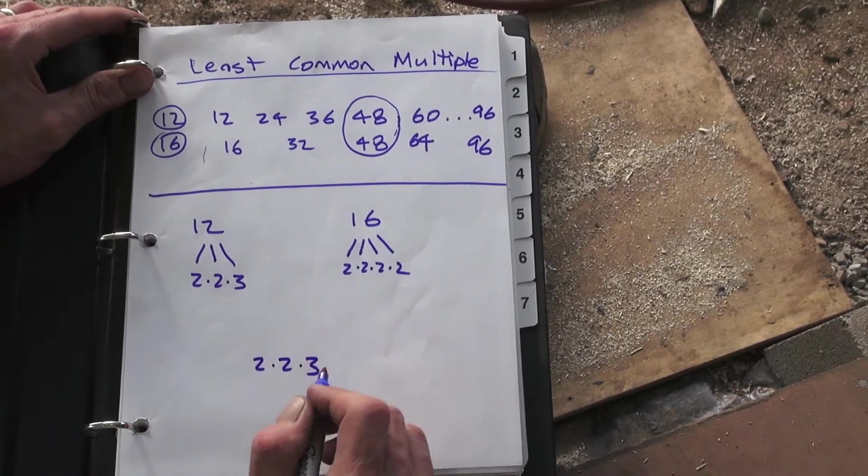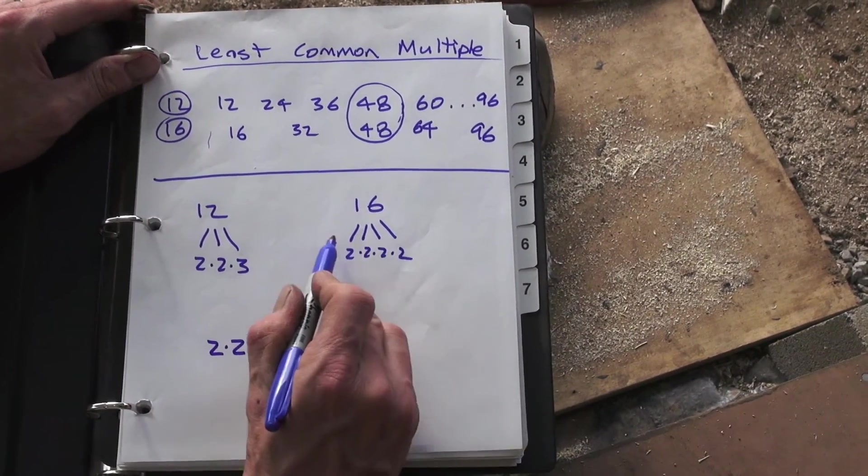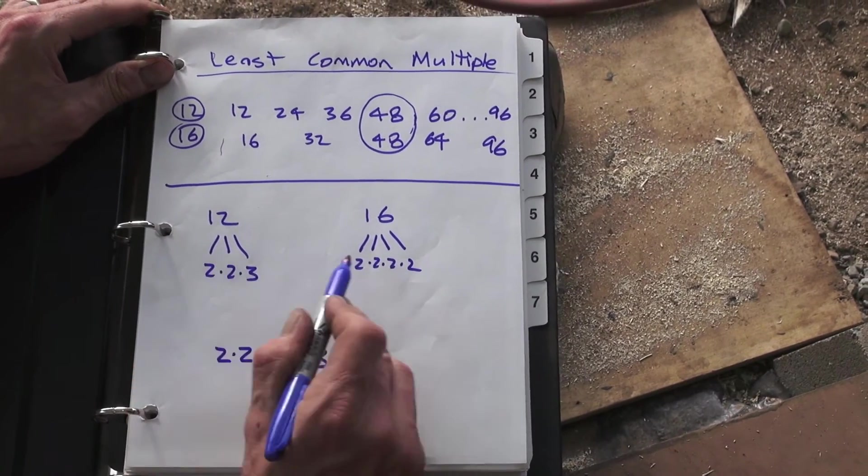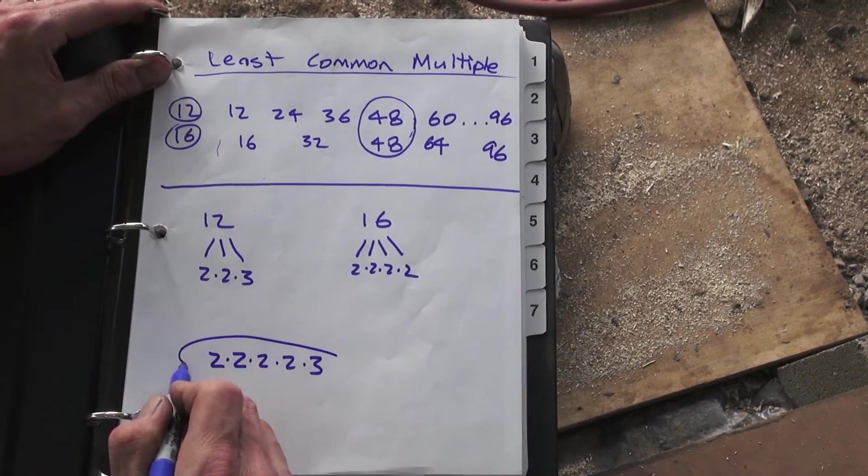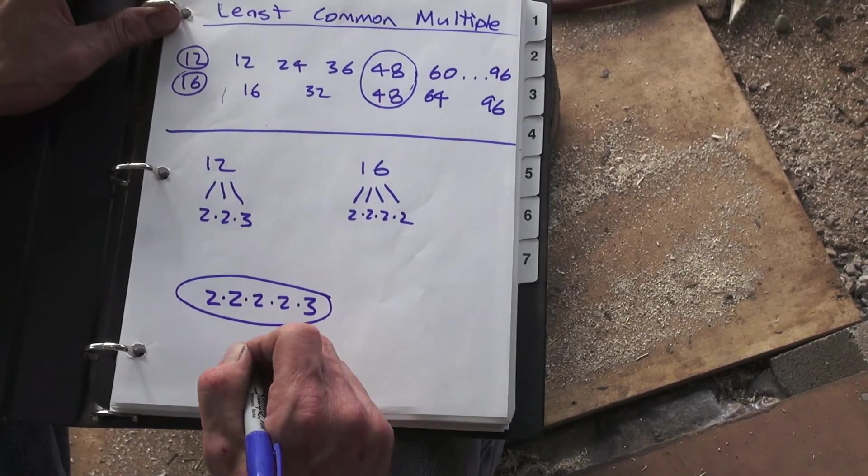So you actually need a couple more of these here, right? Because it's got to have enough 2s to cover either one. It's got to have enough 3s to cover either one. So that's it, right? Because let me write it out again here.